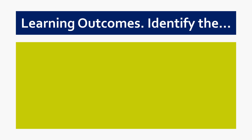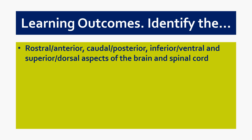These are the learning outcomes for the Swansea University Medical Students. To identify first of all a series of terms that are related to how we navigate our way around the nervous system: rostral, anterior, caudal, posterior, inferior, ventral, and superior dorsal.